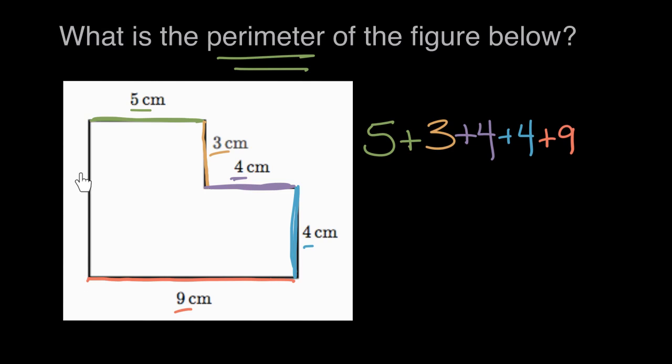...and uh-oh, we don't have a label. We don't know how far this is. But to find perimeter, we need the distance around the entire outside.